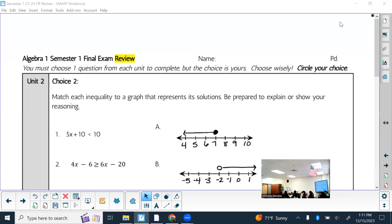But unit two, choice two, again, I mentioned that they are really similar to what is on the real final, okay? Just different numbers, different graphs.